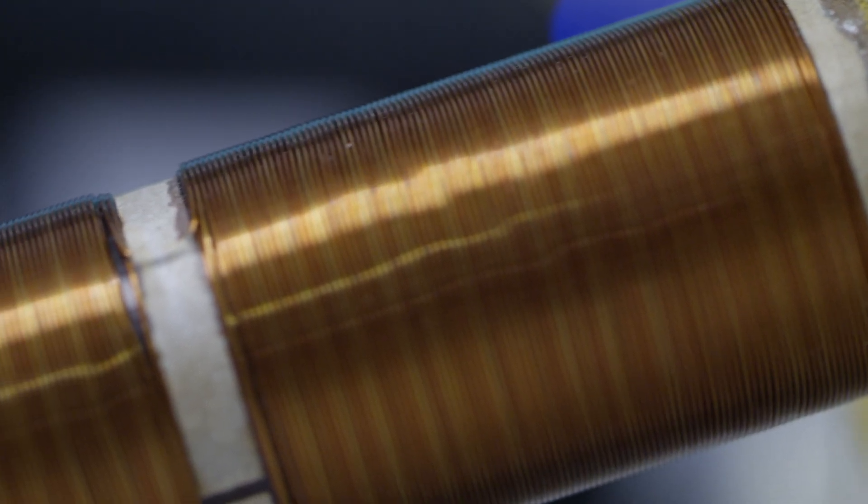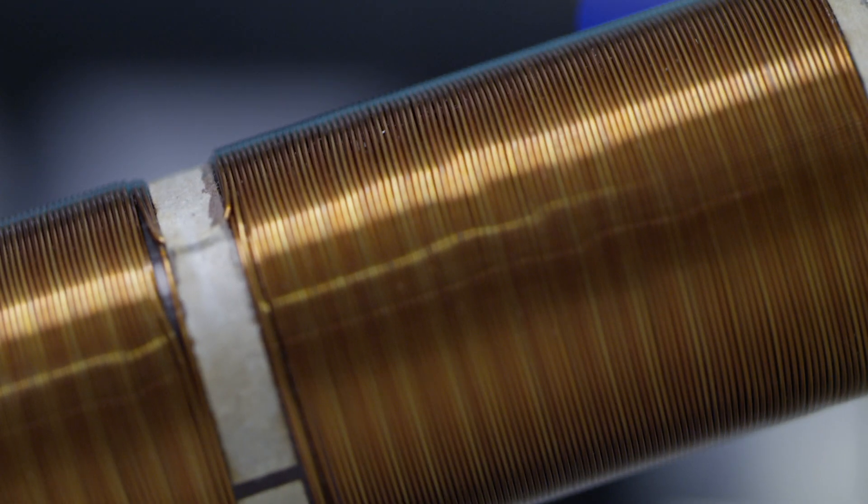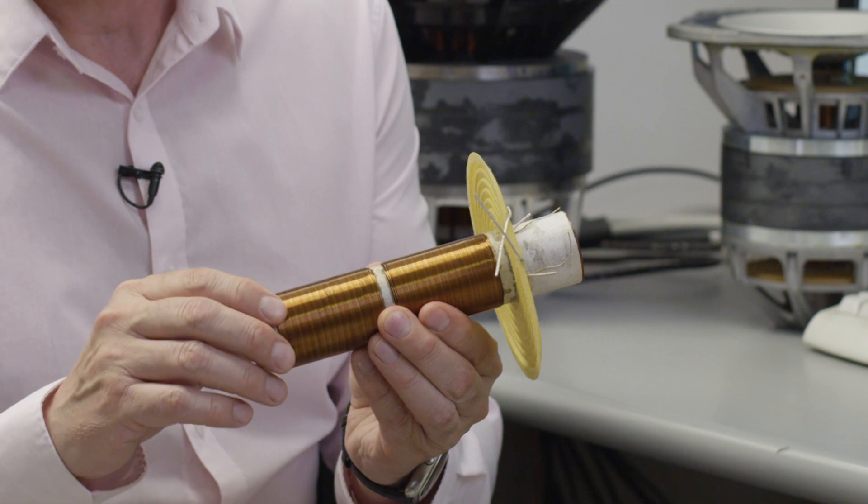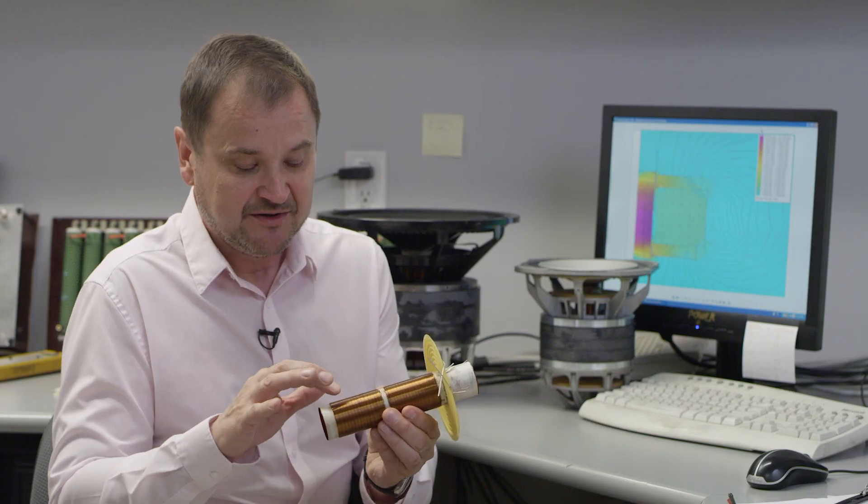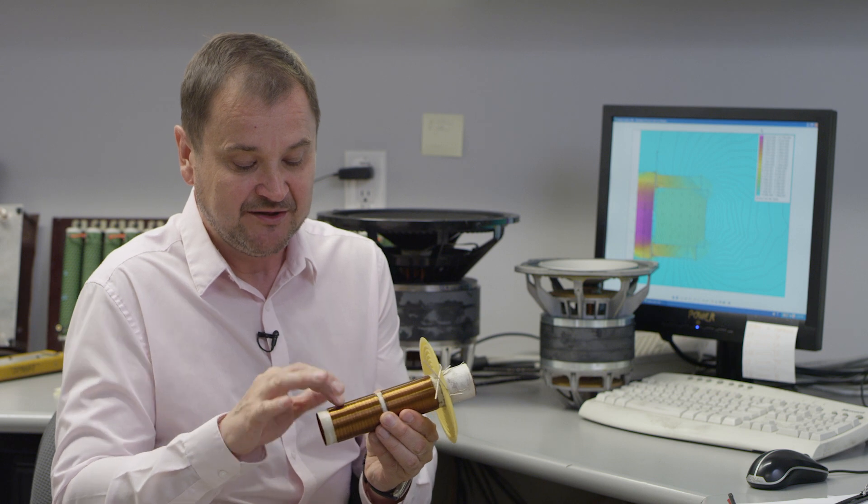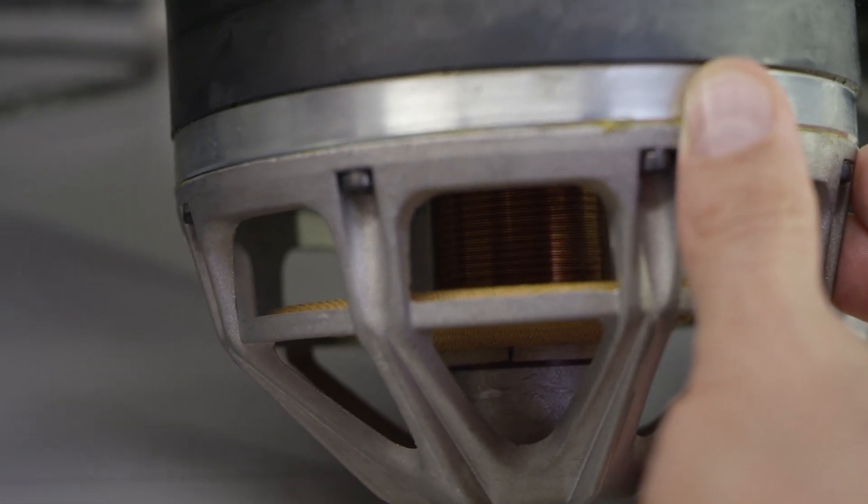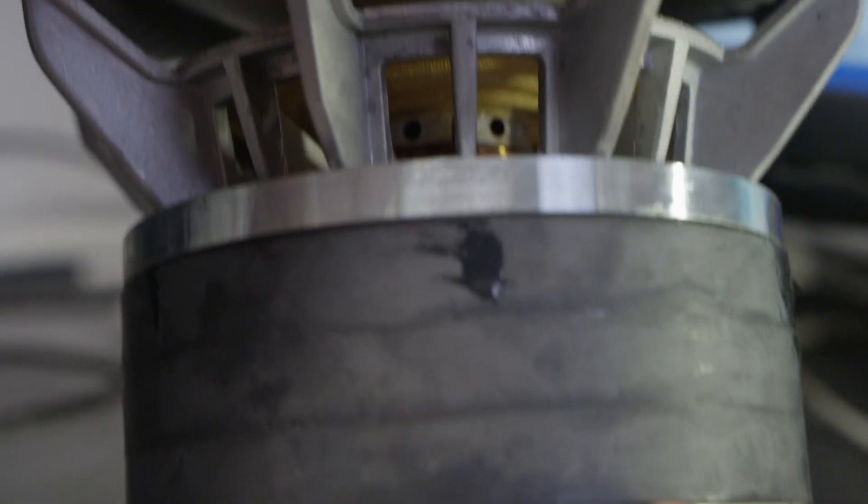Two voice coils create magnetic fields that are opposing because they wind in opposite directions. So what happens is that every time there's a magnetic field generated by either of the coils, it's canceled by the magnetic field of the other coil. So that means there is no addition or subtraction to the magnetic field of a permanent magnet.